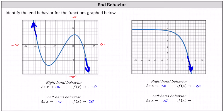For the left-hand behavior, x is approaching negative infinity, so we can think of moving left along the function. As we move left along the function, notice the graph levels off. We can see the y values are approaching positive five, which indicates the left-hand behavior is: as x approaches negative infinity, f of x approaches five.